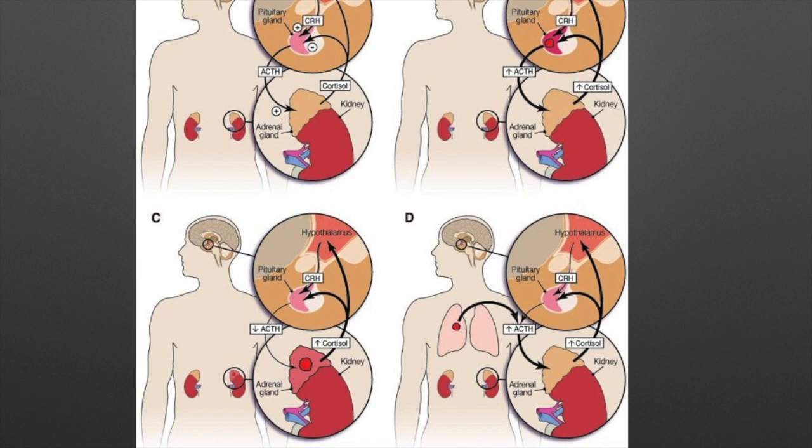In scenario D — the least likely cause of Cushing's — there is a carcinoma in the lung. This carcinoma secretes ACTH, so ACTH levels are high. ACTH then tells the adrenal gland to release high levels of cortisol, so both ACTH and cortisol will be elevated in that scenario.